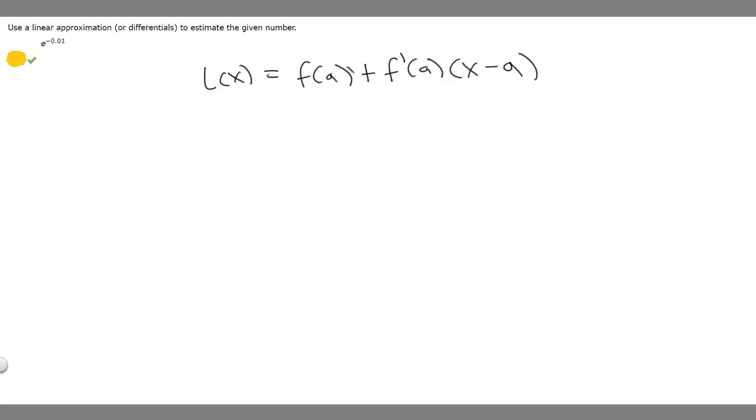What we have to decide is what a is going to be and what f(x) is. When deciding a, you basically just want to pick a number that's close to whatever your exponent is. In this case, a number that's close to zero.